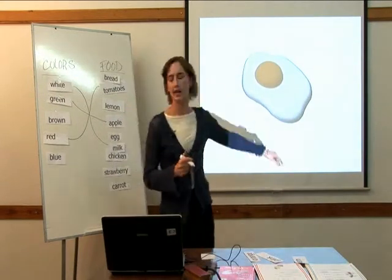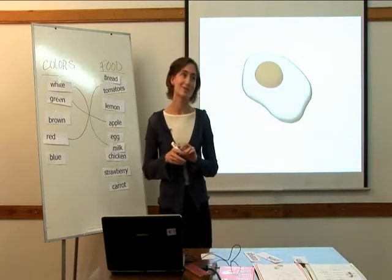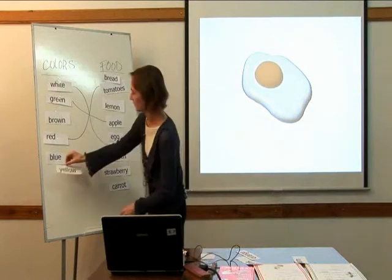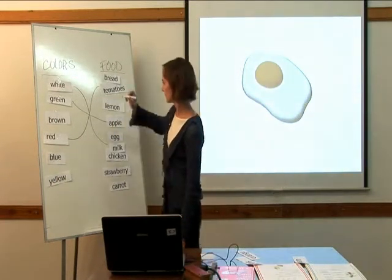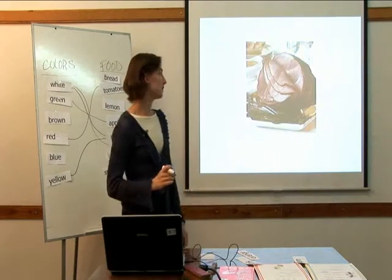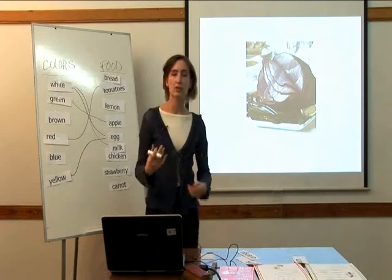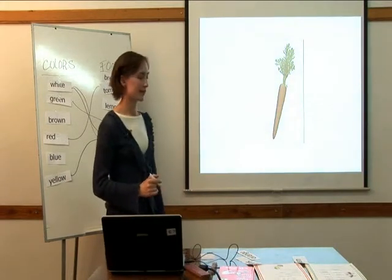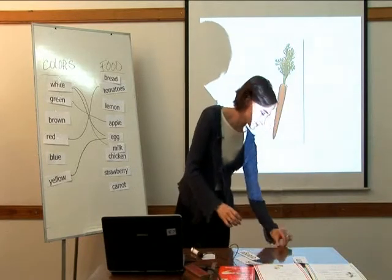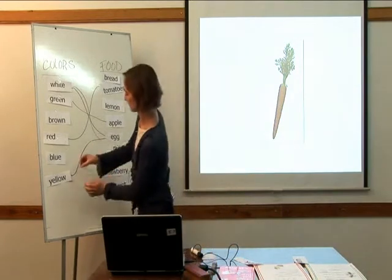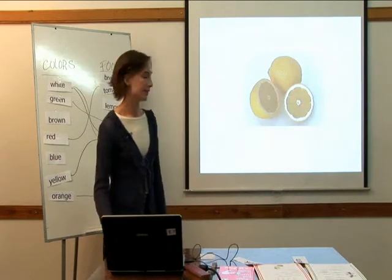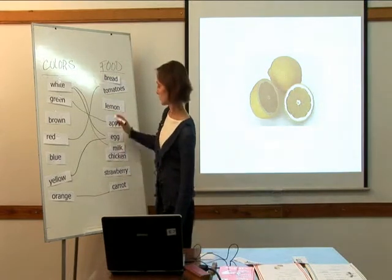And the next one? An egg. This is an egg. Now, this is actually two colors, right? It's white and yellow. So we have a white and a yellow egg. Moving right along — ham. You could say ham is maybe pink or brown, depending on how you see it. Here we have a carrot. The carrot is orange. And lemons — we know lemons are yellow, so we can put yellow with lemon.